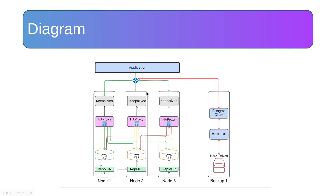We have here a diagram — this is an overview of the design. We have three nodes: the first node, second node, and third node. Each node has a PostgreSQL database installed, and each PostgreSQL server has a Repmgr service connected between the three nodes to replicate and stream changes. We also have HAProxy installed on three nodes, capable of reaching all three nodes. Keepalived monitors the HAProxy service and provides a virtual IP. In case of any HAProxy failure, it will promote a new master, and the virtual IP will be used in the application connection string.